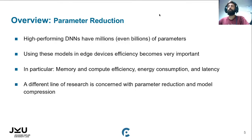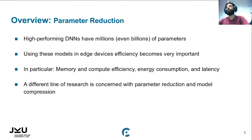High-performing networks have millions, even billions of parameters, as we can see in vision, in NLP with GPT-2 and GPT-3, and even in audio and DCASE submissions — we see always large models and ensembles of many models. But if you want to use these models in edge devices, then efficiency becomes very important: memory and compute efficiency, energy consumption, and latency. We want the model to fit in the device memory and we want inference to be in real-time. That's why there is a lot of literature about parameter reduction and model compression.